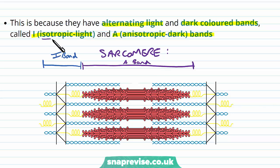So I stands for isotropic for light, and A stands for anisotropic for darker. And then on the other side we have the kind of mirror image. This is another I band. And then essentially it just repeats itself over and over again.